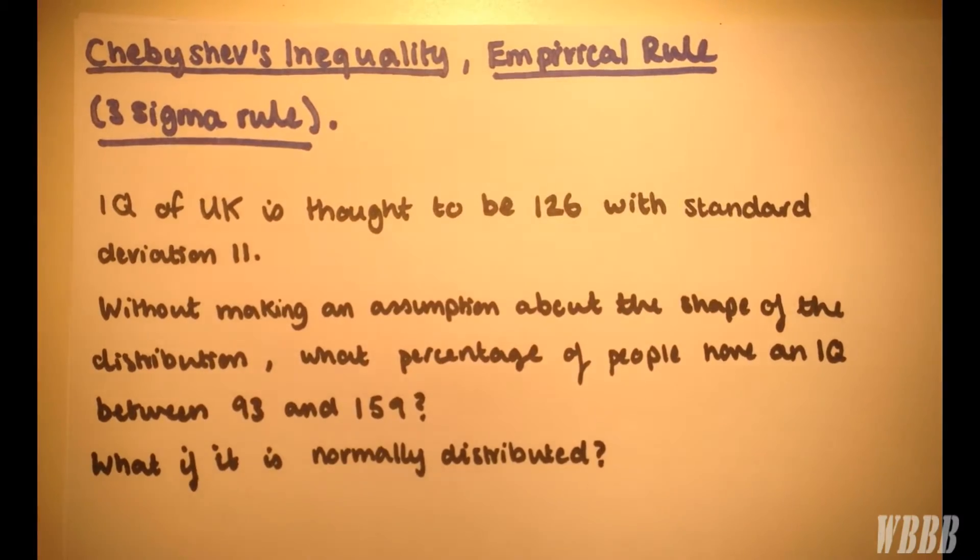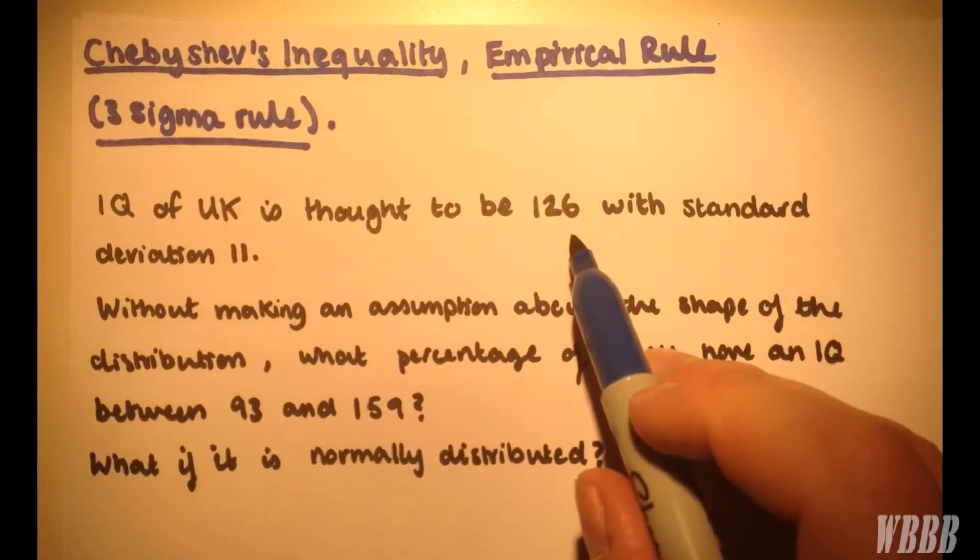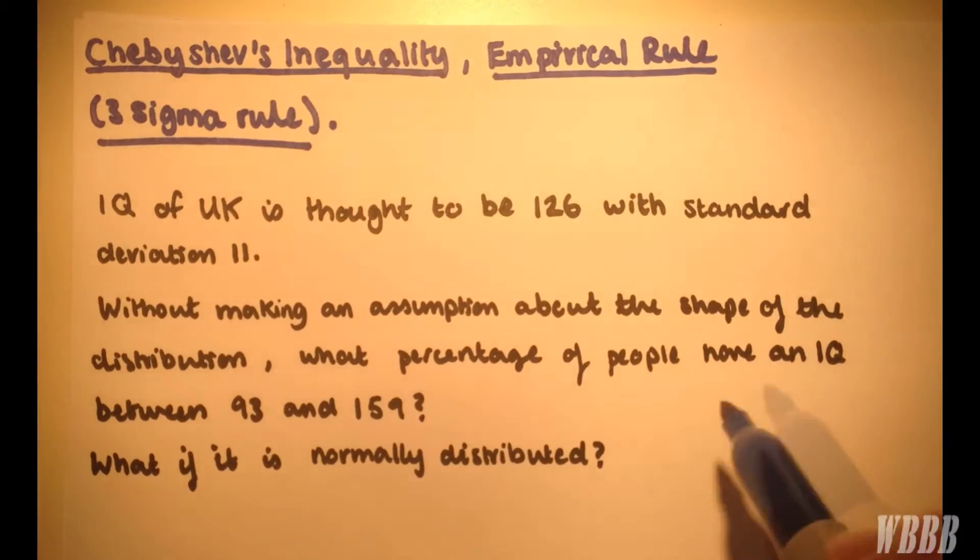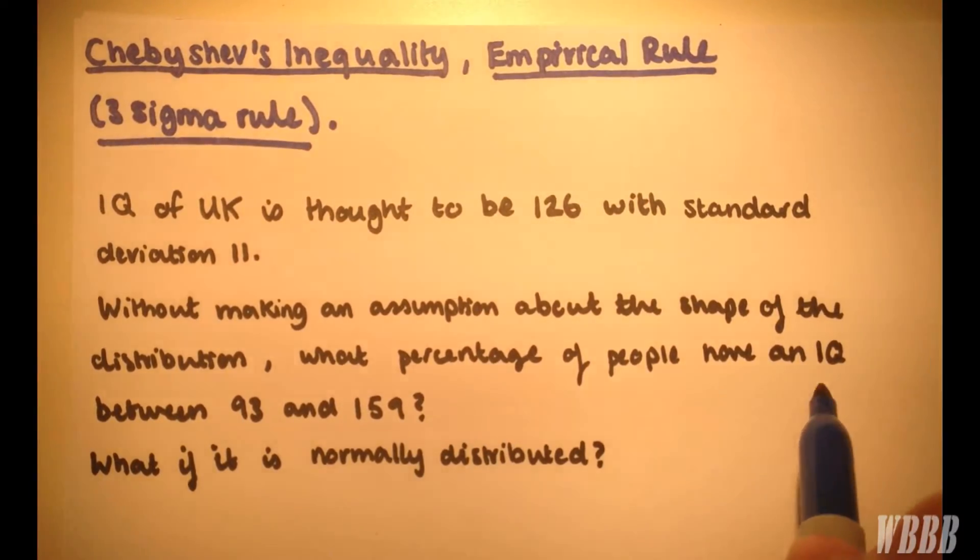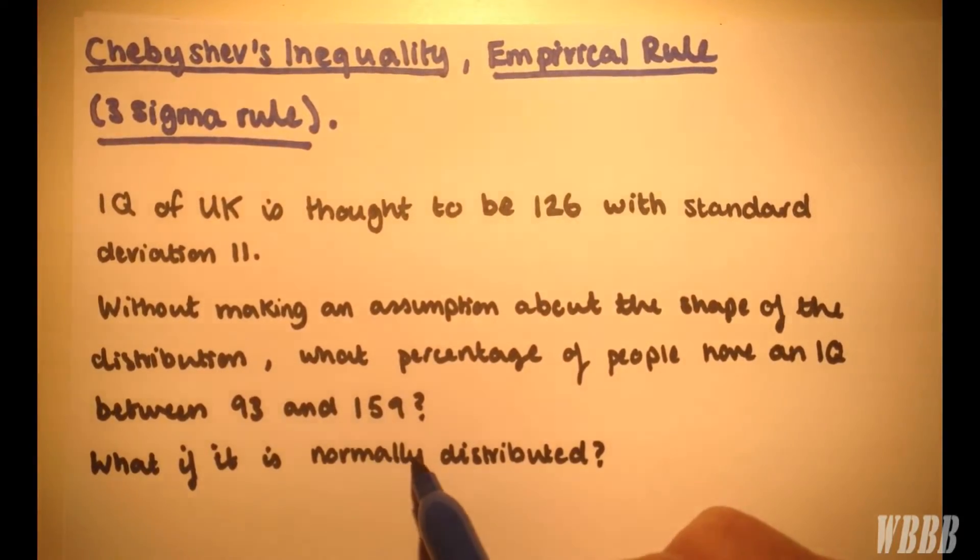OK, so the IQ of UK is thought to be with an average of 126 and standard deviation 11. So without making any assumption about the shape of the distribution, what percentage of people will fall into this bracket here between 93 and 159? The second part of the question is what if it's normally distributed?